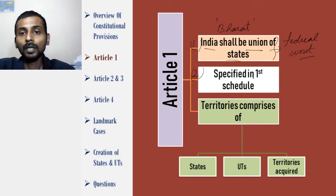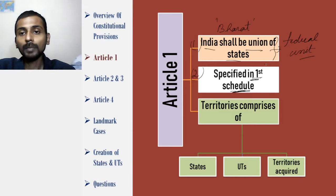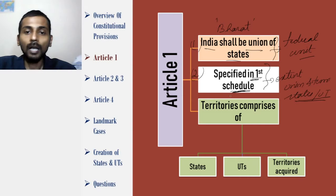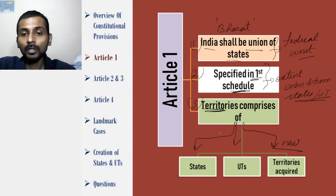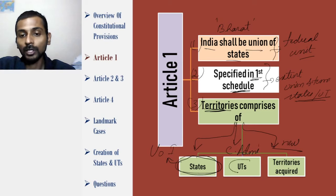Clause 2 of Article 1 talks about Schedule 1. The First Schedule is referenced in Article 1 Clause 2 and basically gives the extent of the union and territories of India — it includes both states and union territories. Clause 3 of Article 1 tells what all comprises the term 'territories of India.' Territories of India includes the states of India, the union territories of India, and any new territories which have been acquired. So 'territories of India' is a broader term — it includes the union of India (the states), the centrally administered regions (union territories), and any newly acquired territory.